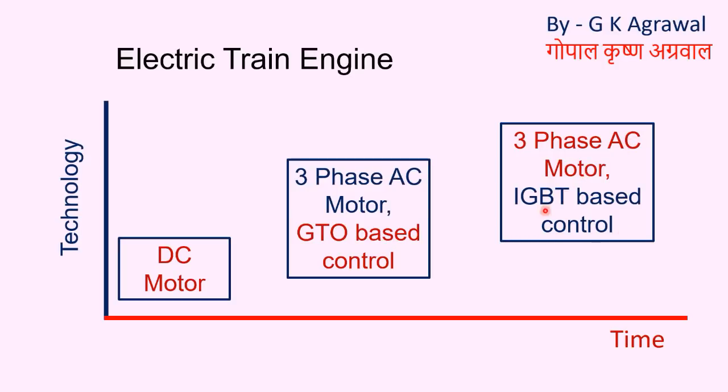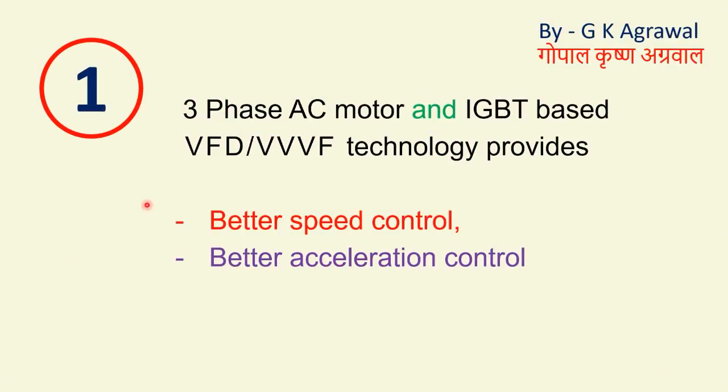These AC motors along with IGBT-based control are giving advantages. In the olden days, this IGBT-based control system was not there. First advantage is: 3-phase AC motors and IGBT-based VFD, VVF technology provides better speed control and better acceleration control in the engine. VFD means variable frequency drive. When this control has variable voltage also, we call it variable voltage, variable frequency.